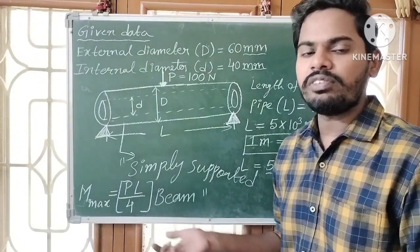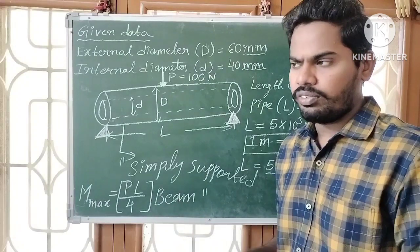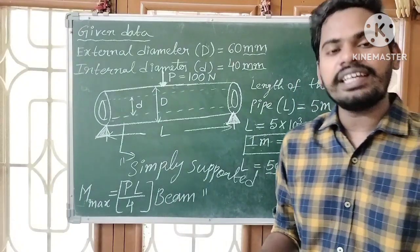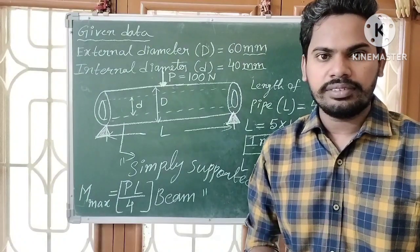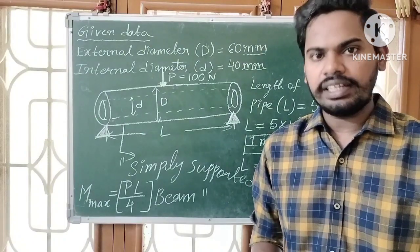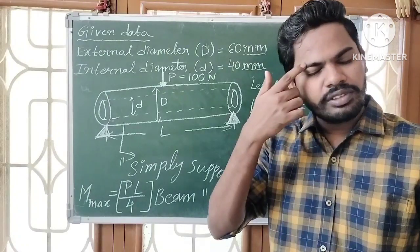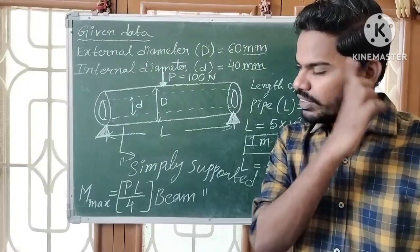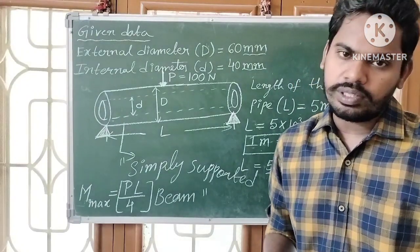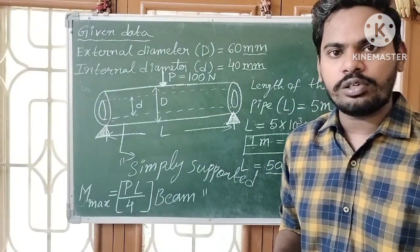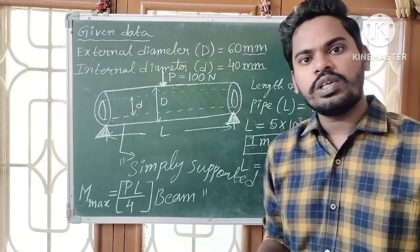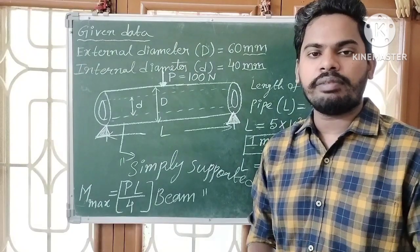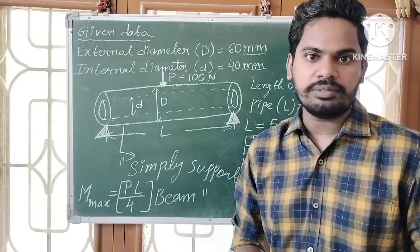Here we want maximum bending stress, so we have to apply the bending equation — the theory of simple bending. The bending equation is: M/I = σB/Y = E/R. By using this formula, we can find σB, which means bending stress — specifically maximum bending stress.